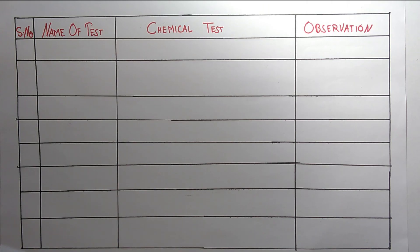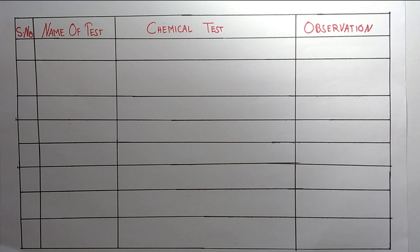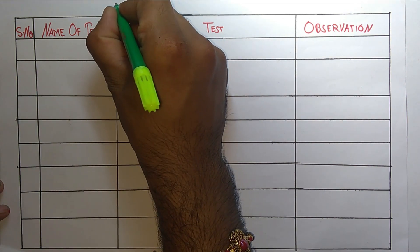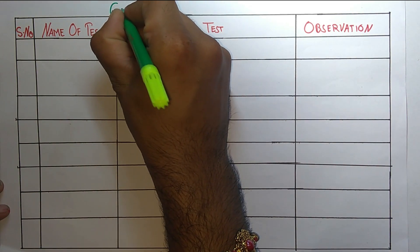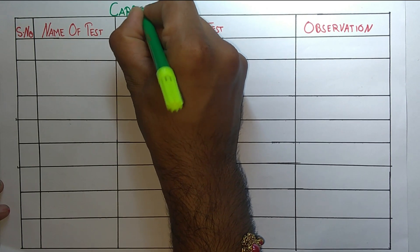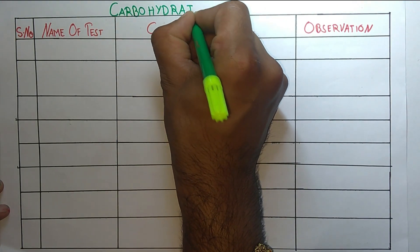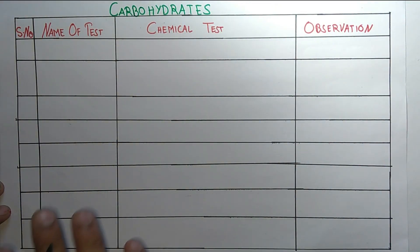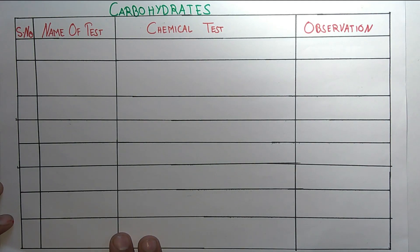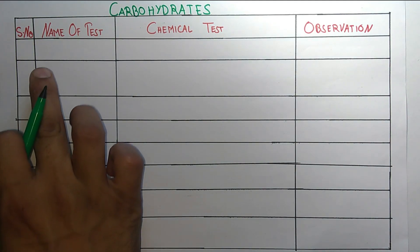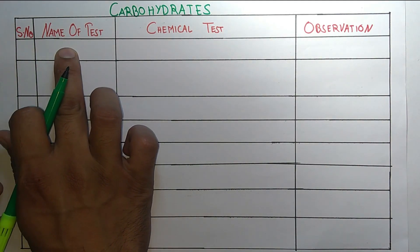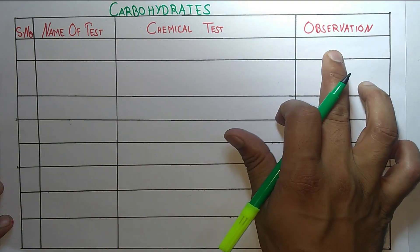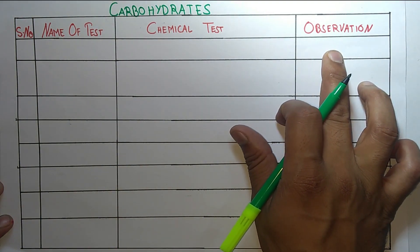Hello students, welcome to the channel Pharma4U. Today in this video we are going to discuss the chemical tests of carbohydrates. We are going to discuss the name of each test, the chemical procedure, and the observation — what color will be produced.